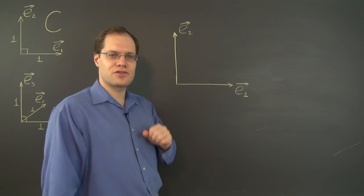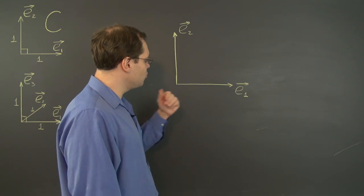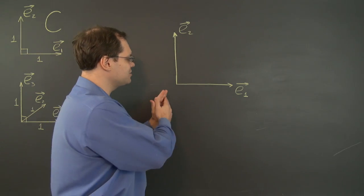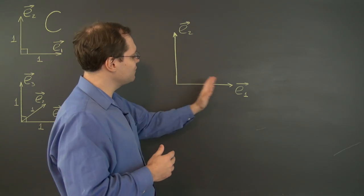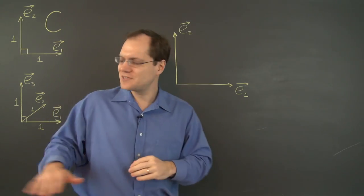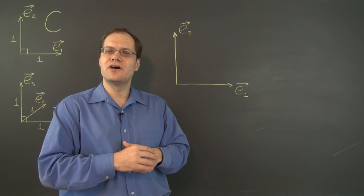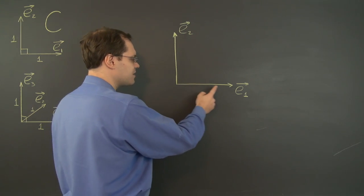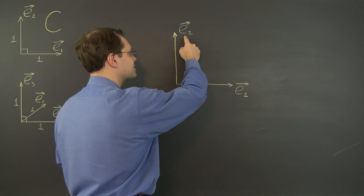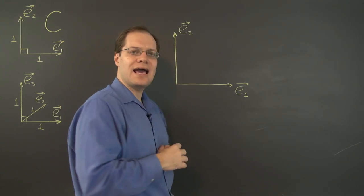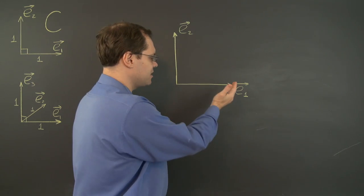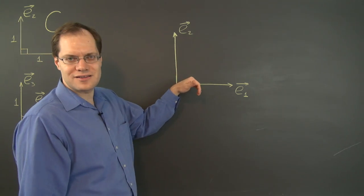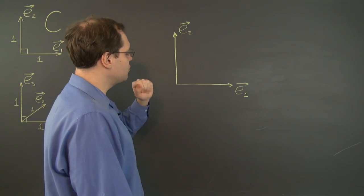Consider this basis — it's clearly orthogonal. I'm also thinking of it as orthonormal. These vectors are slightly longer than unit vectors, but I wanted to make them larger so it's easier to talk about — think of them as unit length even though they're out of scale with this drawing. A basis is called right-handed, or positively oriented, if the shortest path from the first vector to the second vector is in the counter-clockwise direction. That's the definition.